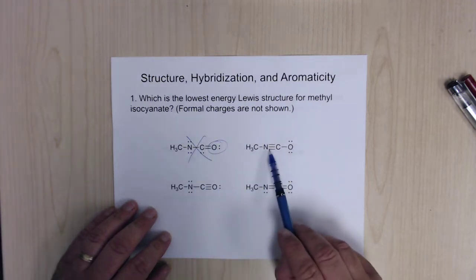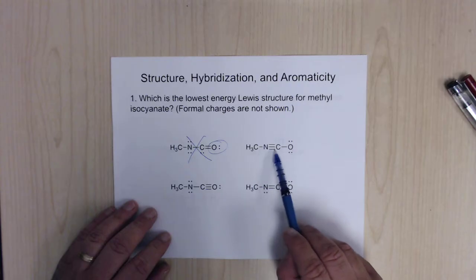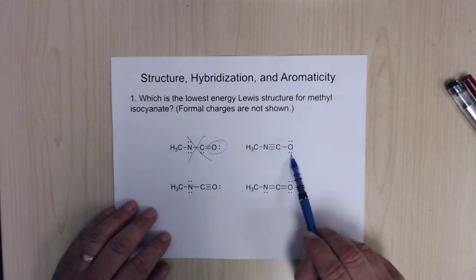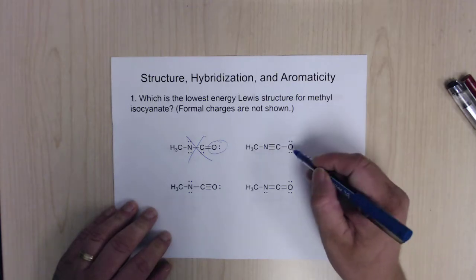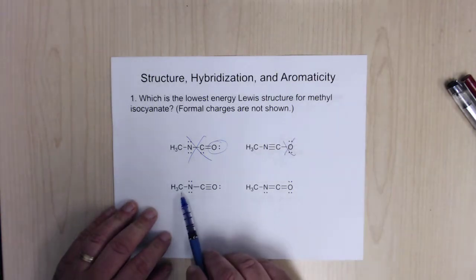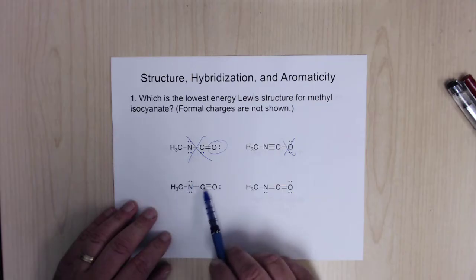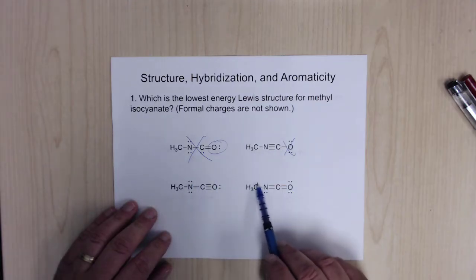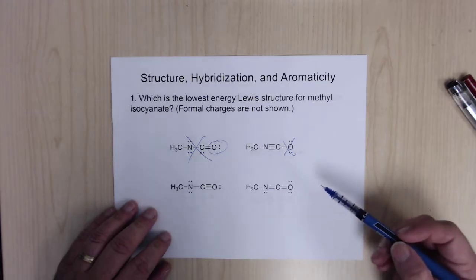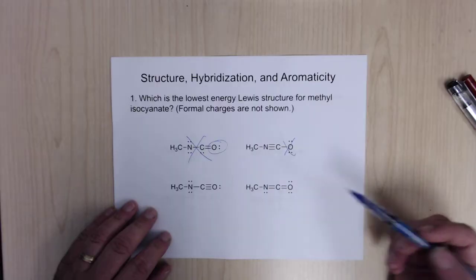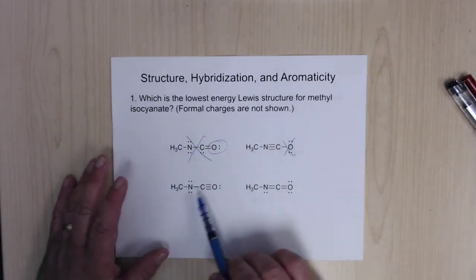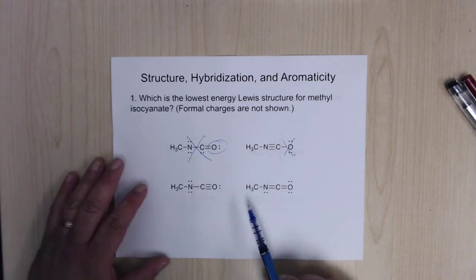Look at this one: methyl's fine, nitrogen's fine with four bonds, carbon's fine with its four bonds. Again, this one only has 2, 4, 6 on it, so that's not going to work. For the next one, octet is filled, filled, filled, and here it is filled as well — each of these has eight electrons around them. So now we're just down to these two.